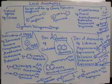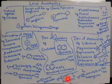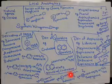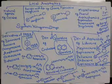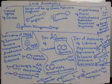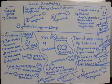For butacaine: draw the basic para-aminobenzoic acid setup, then add 3 carbons, a nitrogen, and 4 carbons on each side of the nitrogen. This structure is called butacaine.